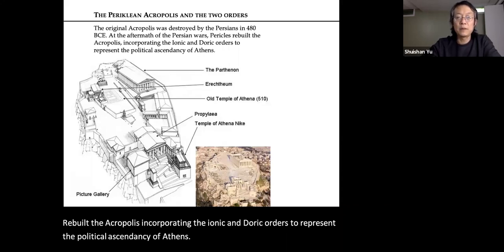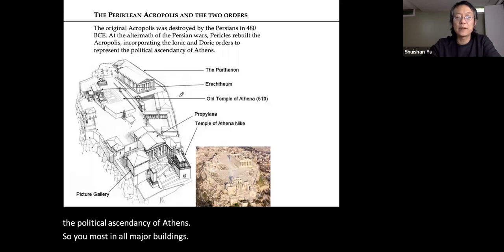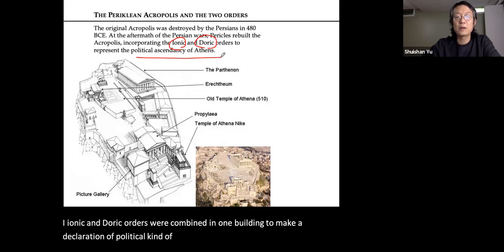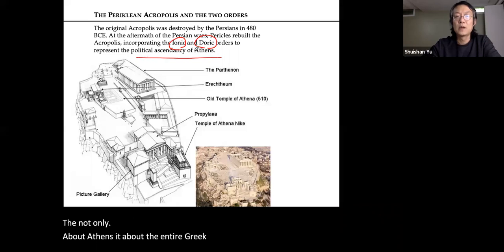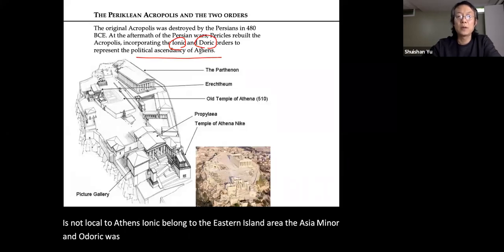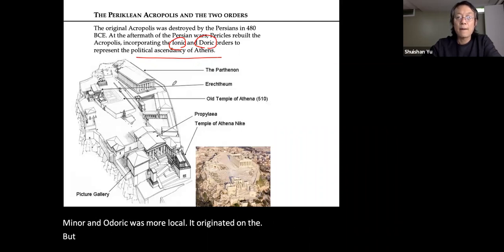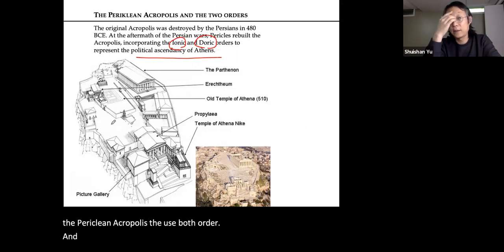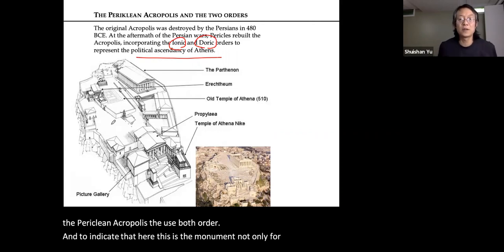In all major buildings of the Periclean reconstruction, Ionic and Doric orders were combined in one building to make a declaration of political unity and to claim that Athens represented not just itself but the entire Greek world. The Ionic order originated in the eastern island area and Asia Minor, while the Doric originated on the Peloponnesian Peninsula. Athens, located between these regions, used both orders to create an architectural union and celebrate the victory over the Persian army — a victory the Athenians credited to the unity created under Athenian leadership.